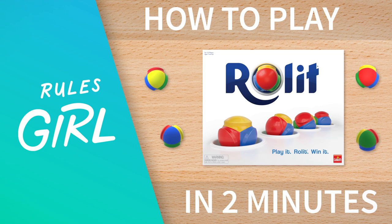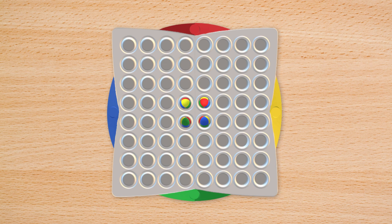I'm the Rules Girl and this is Roll It, a fast-paced area control game for 2 to 4 players.